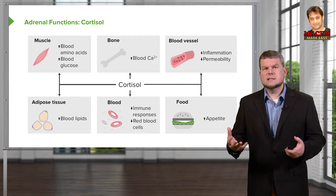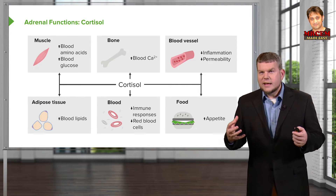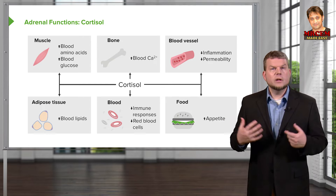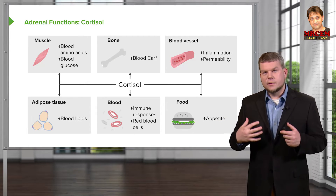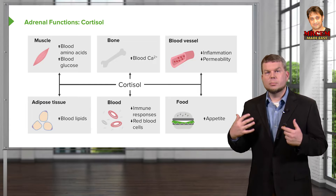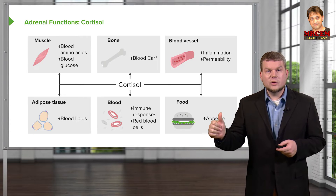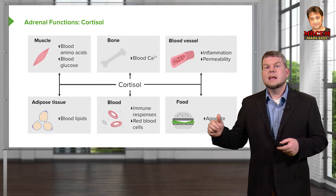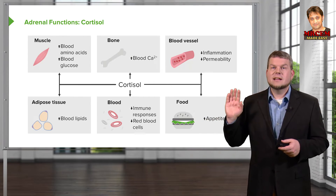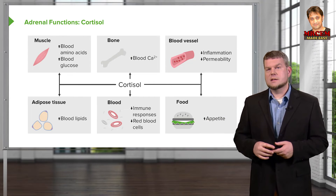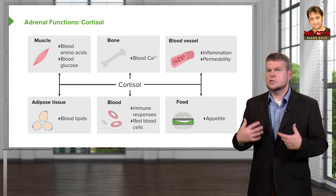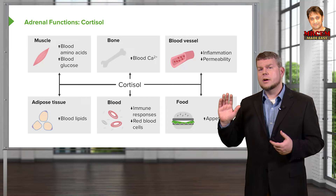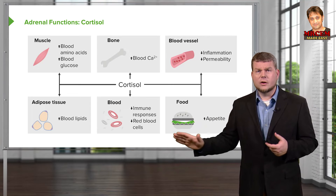Overall, this process is really about short-term needs. What do you need in the short-term? If you're stressed and you need to perform well, you need to have high blood glucose levels, blood lipid levels, and blood calcium levels, and you don't worry about inflammation or immune responses — because you're stressed and you need to make sure you have enough energy at the moment, not about defending yourself over the long term.